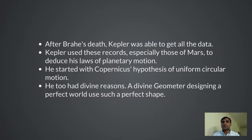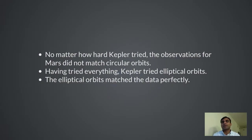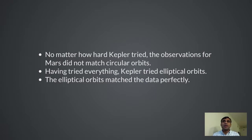Kepler started with Copernicus's hypothesis of planets going around the sun in uniform circular motion, and also had divine reasons — feeling that a divine geometer designing the universe would use perfect circular shapes. But no matter how hard Kepler tried, the observations would not match circular orbits, even using the more precise data of Tycho Brahe. Eventually Kepler had to let go of his circular hypothesis. He tried fitting an elliptical orbit, and voilà — the elliptical orbit fit very well on the available data.